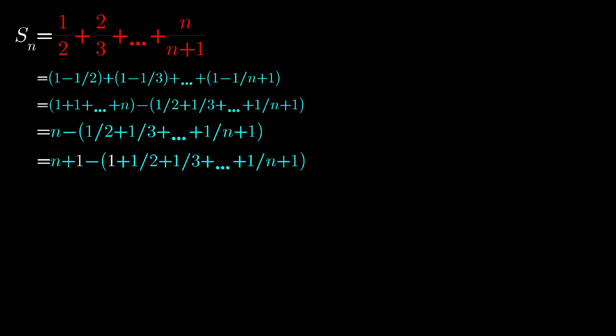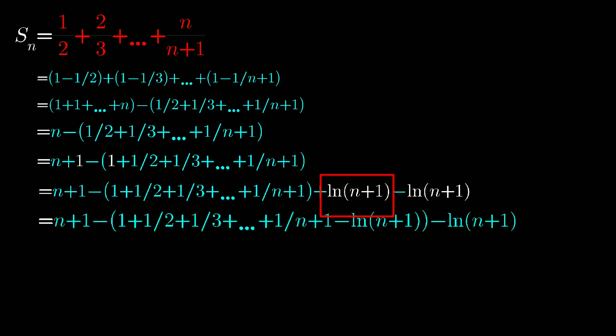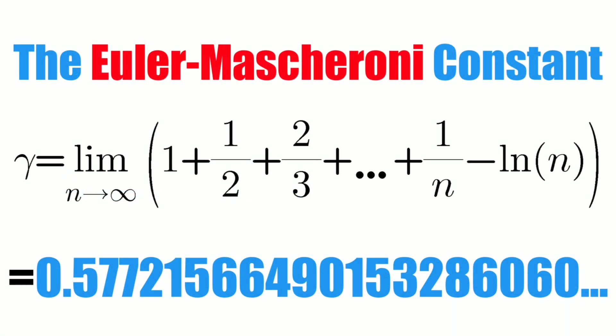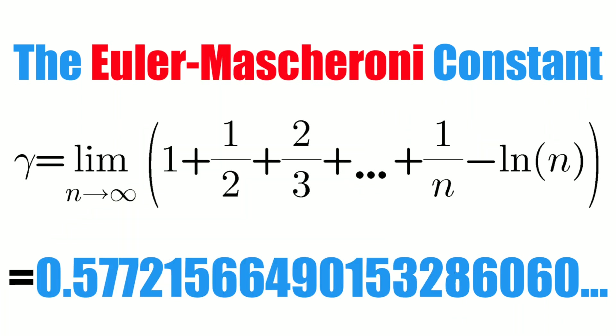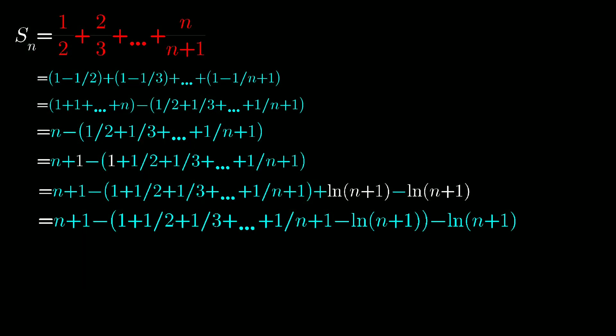Now we are going to add and subtract ln and take positive ln into the harmonic series. Here we have a series which is known as the Euler-Mascheroni constant, which is denoted as gamma. As we have this series up to n plus 1 term, we will write it as gamma n plus 1.